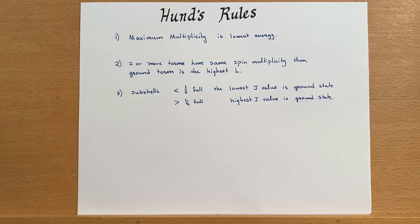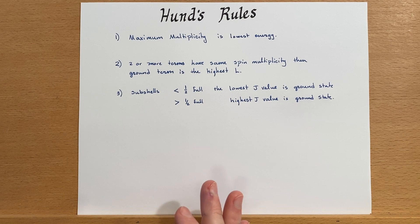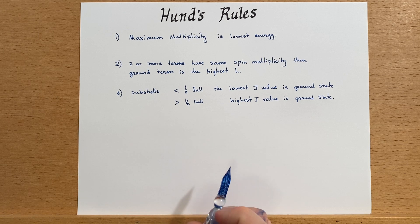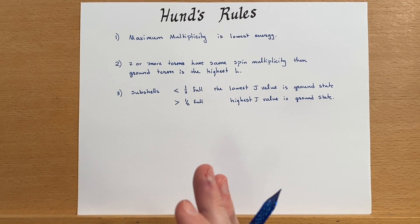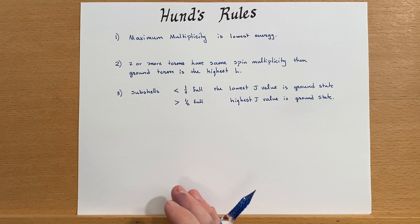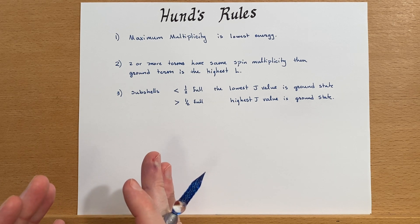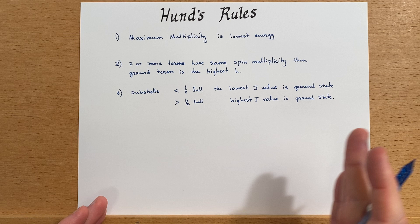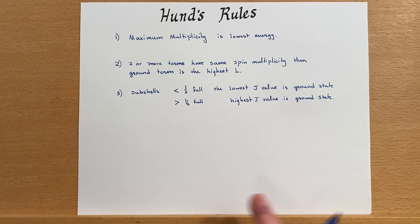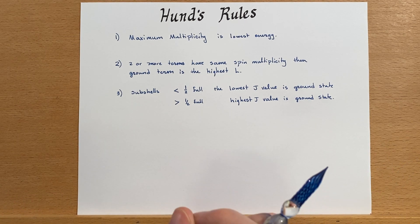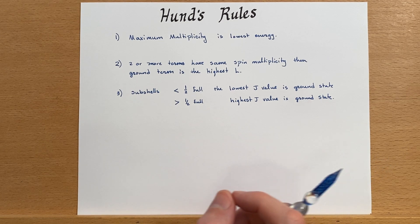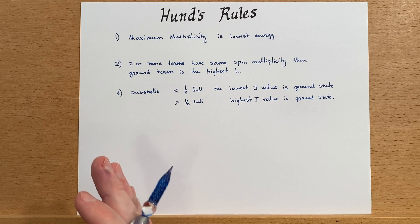Now let's look at Hund's rules. You may have already heard of the first Hund's rule, which is that the maximum multiplicity is the lowest energy. You might think that this is really about having all of the orbitals spin aligned and spread out, but we can get a little bit better definition on these rules and relate them to our free ion terms.